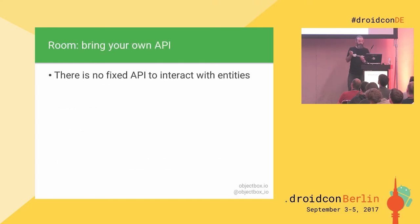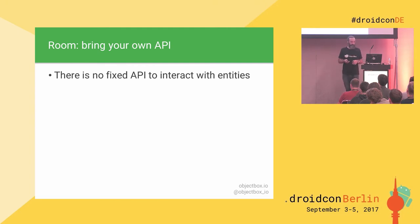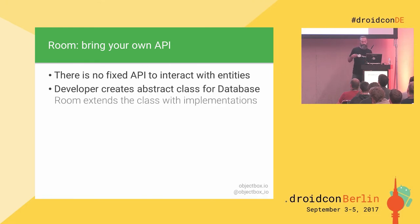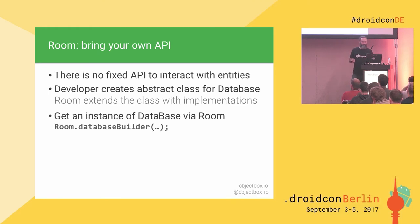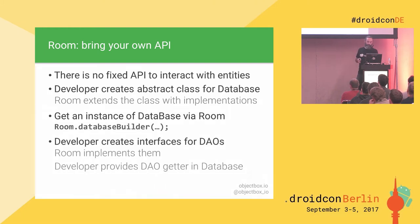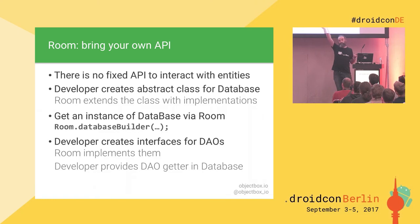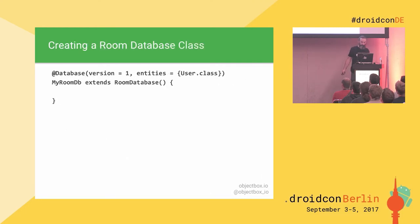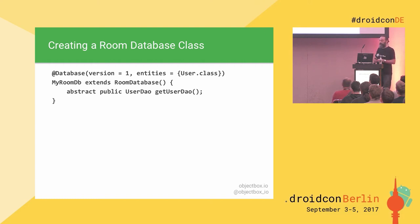A very interesting aspect of Room is it's basically 'bring your own API' — the API is not that fixed. For example, if you look at a database class, you provide an abstract class and Room will extend it and implement the abstract methods. For DAOs it's similar — you provide interfaces. If you're using Retrofit, you know this approach. It also works with Room.